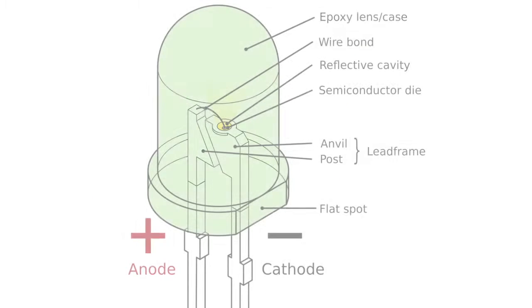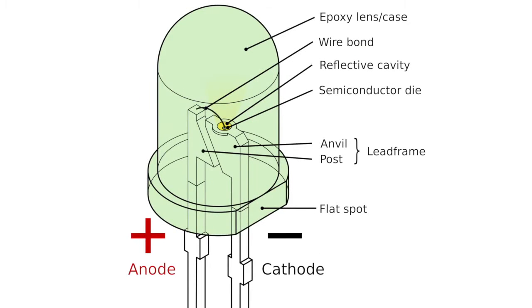One thing you may not know is that the LED color comes from the LED itself, not the plastic package it's enclosed in. The package coloring is just there to help identify the correct version before you put it in your circuit.